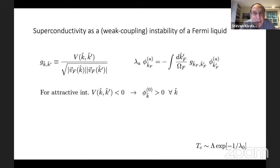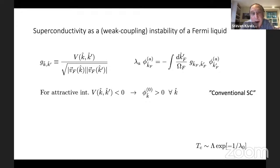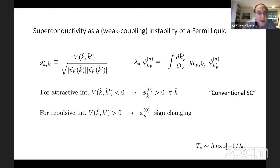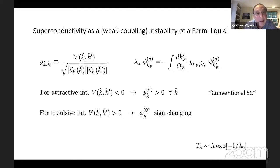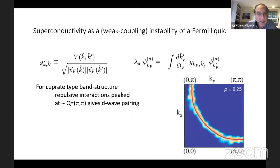Looking at the gap equation, there are two different extreme cases. If the interactions are attractive — if G is negative — then the Perron-Frobenius theorem tells us the largest eigenstate has all positive amplitudes, giving rise to conventional superconductivity. If V is everywhere repulsive, the sign-preserving state cannot be the highest, and a sign-changing state must be the highest solution, giving unconventional superconductivity.